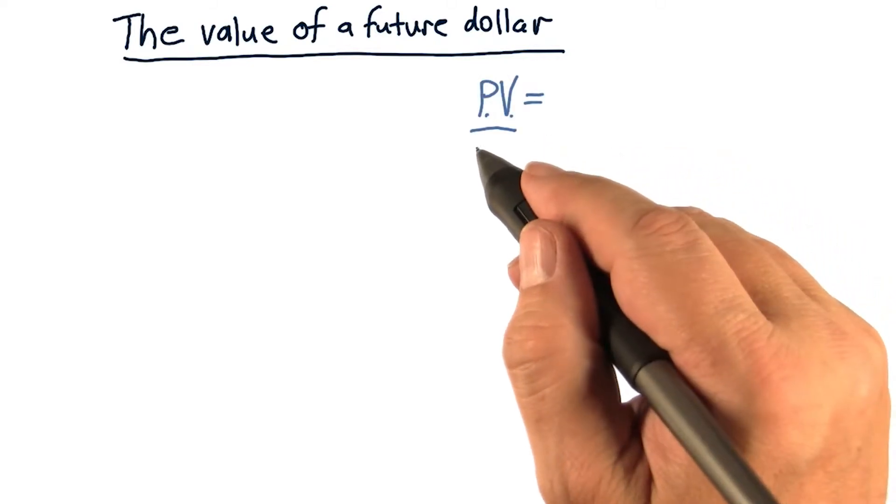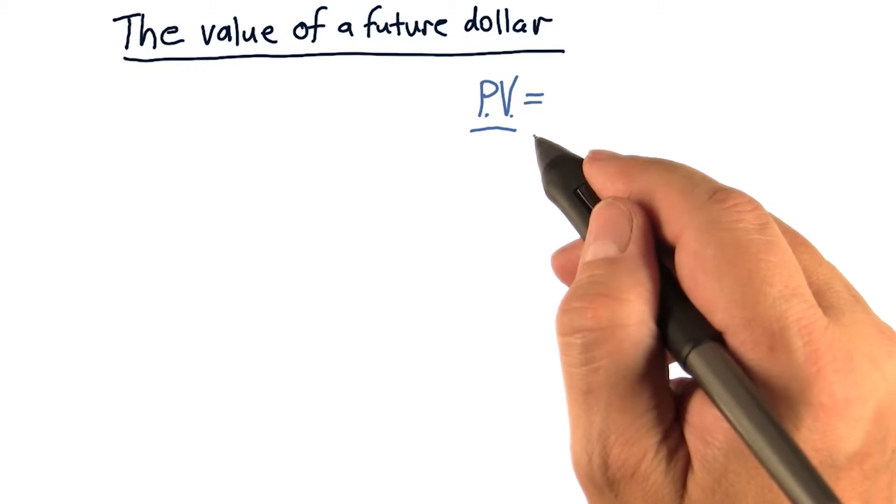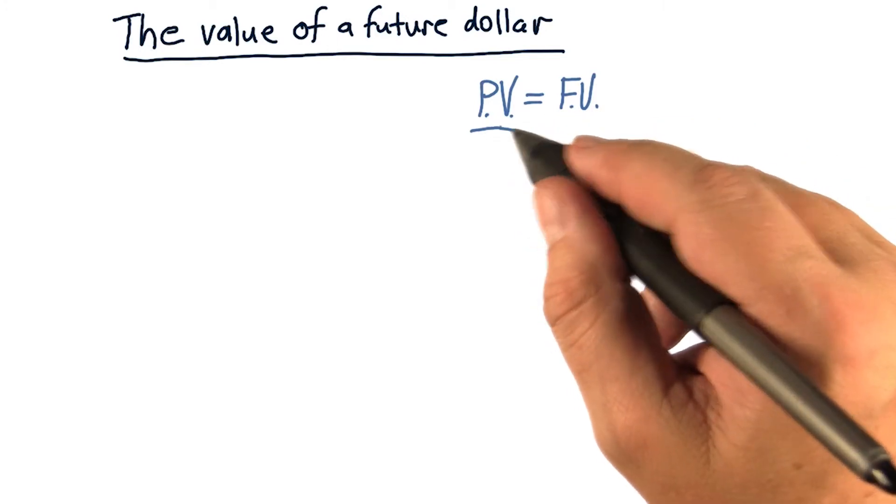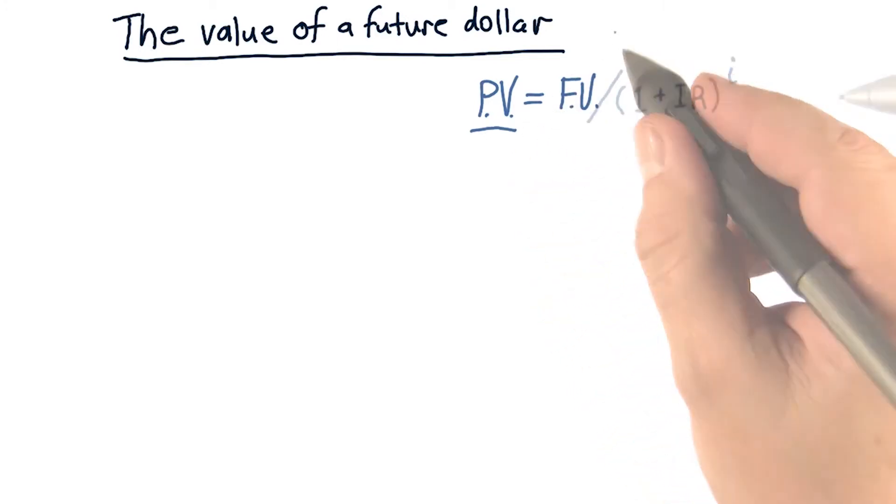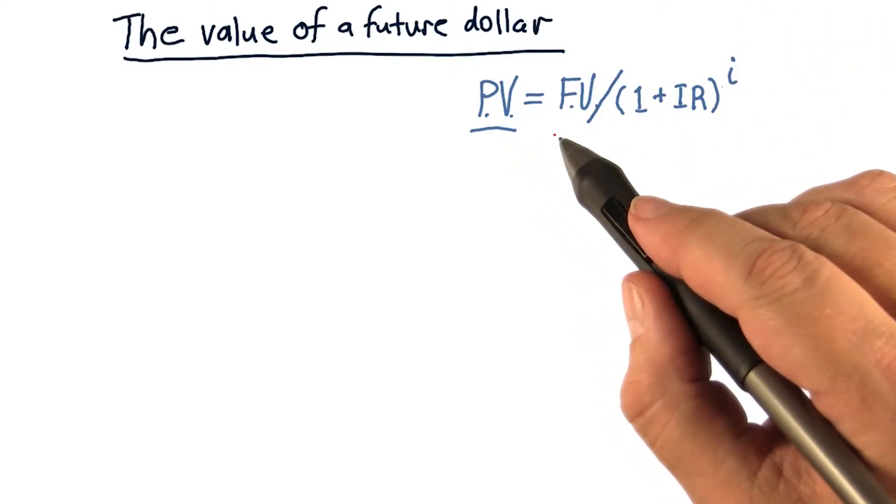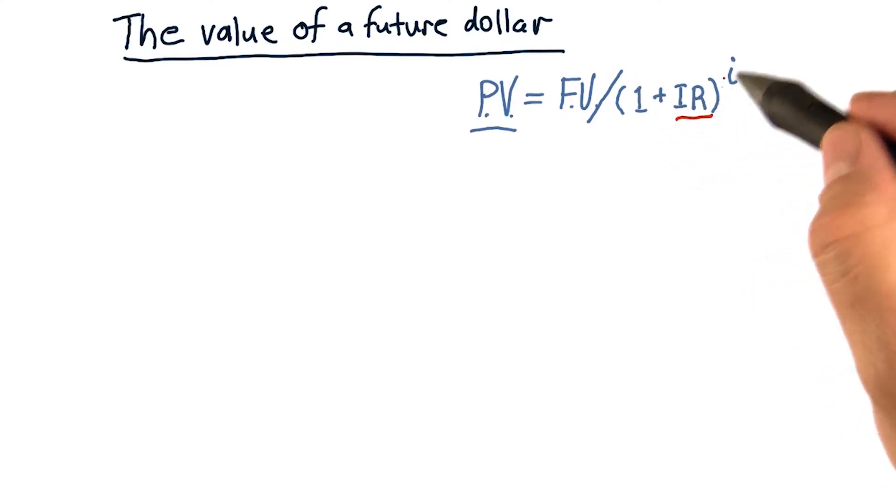We're trying to figure out the present value, or PV, of a dollar that will be delivered in the future. So it's worth some fraction of this future value. Present value is worth some fraction of the future value. So here's the formula in its entirety. Present value is equal to future value divided by 1 plus interest rate raised to the i. So the i is how far into the future this payment is going to be delivered.